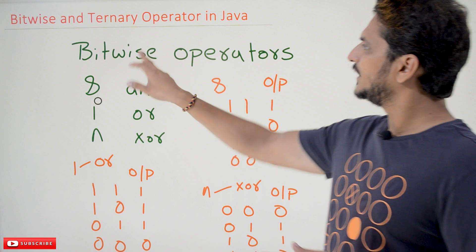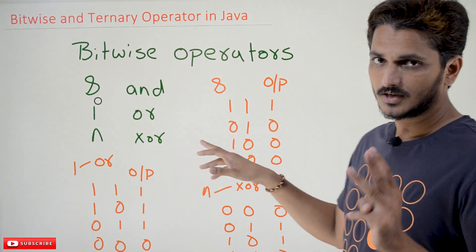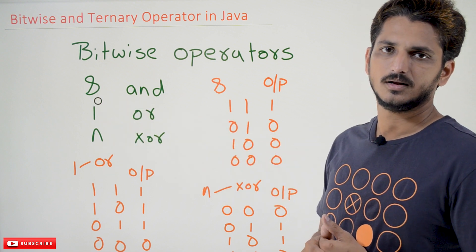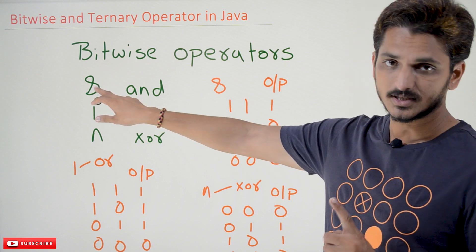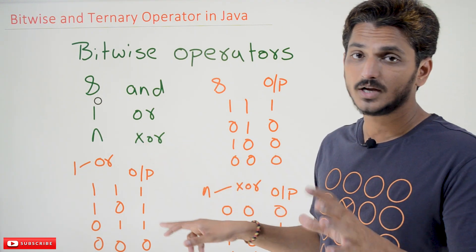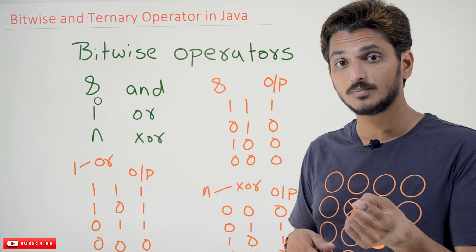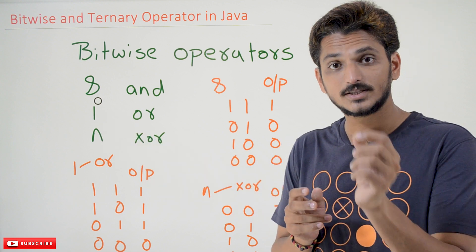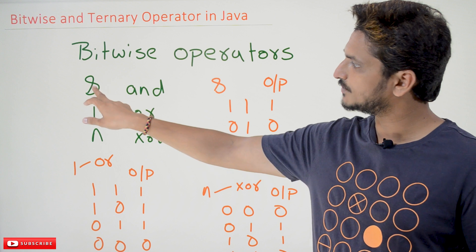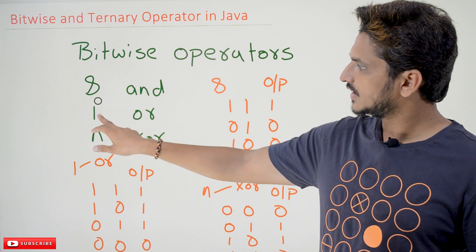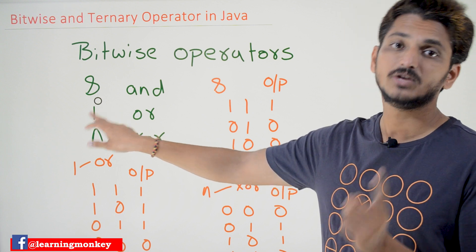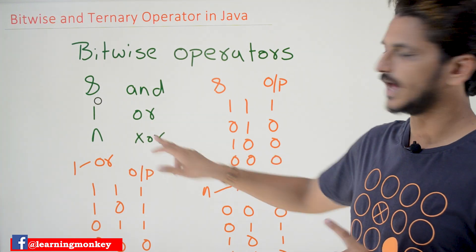Coming to today's class, bitwise operators. There are three types of bitwise operators: AND, OR, and exclusive OR. Ampersand is the symbol for AND, pipe symbol is for OR, and cap symbol is for exclusive OR. Don't get confused with these symbols — in logical operators, double ampersand is logical AND and single ampersand is bitwise AND. Similarly, two pipe symbols is logical OR, and one pipe symbol is bitwise OR. Cap symbol is for exclusive OR.